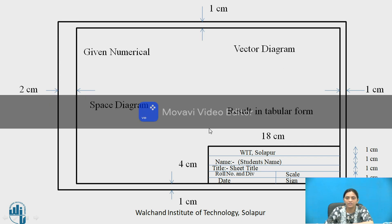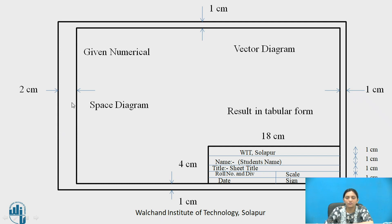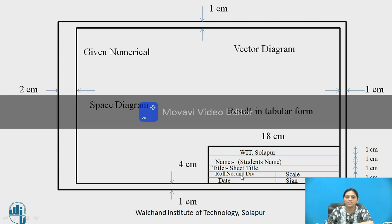This is a sheet of half imperial size. Before starting, just mark the margin. Leave more margin towards left side, that is 2 centimeters. It is required for punching or just to stick the cover. And in remaining 3 sides, leave the margin of 1 centimeter. At the left top corner, draw given numerical.